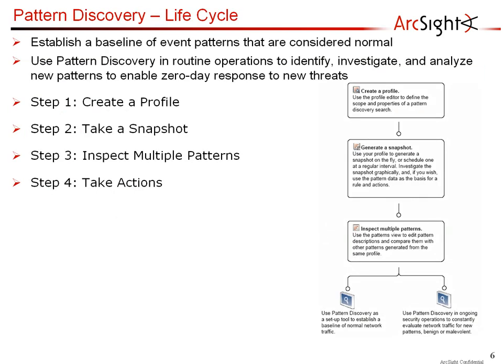Now let's understand what the pattern discovery lifecycle is about. It is very simple — basically there are four steps to this process. First of all, we will be creating a profile, and then we run that profile against the historical event stream, which is what we call a snapshot. In that snapshot you will see the graphical representation of the patterns, and then you can drill down to see individual patterns. Once you have the patterns, you can identify where a pattern has occurred — meaning it will show all the source-target combinations where that pattern has been identified. Later on, you can take several actions on those patterns.